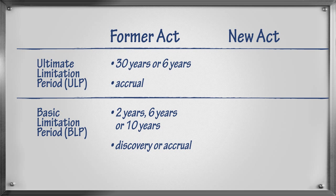or the accrual of the legal claim. Now, under the new act, there is a single 15-year ultimate limitation period which applies to all claims. The ultimate limitation period runs from the act or omission on which the legal claim is based. There is a two-year basic limitation period that applies to all claims, unless the new act specifies otherwise.